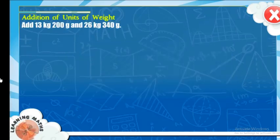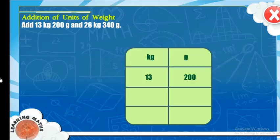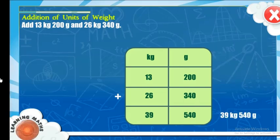Add 13 kilogram, 200 grams and 26 kilograms, 340 grams. Step 1: Arrange the numbers in proper columns, one below the other. Step 2: First, add the grams. Then add the kilograms. Our answer is 39 kilograms, 540 grams.